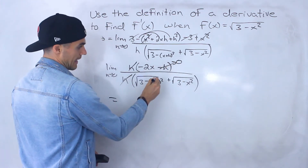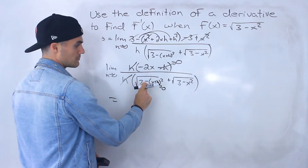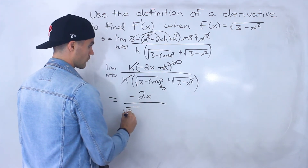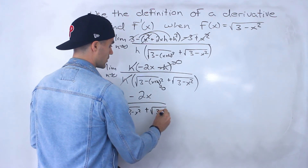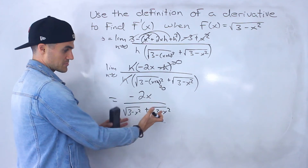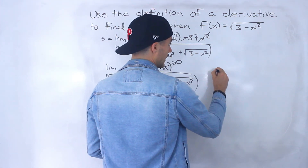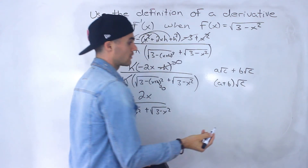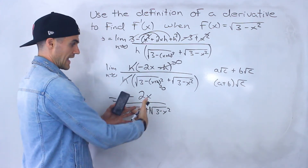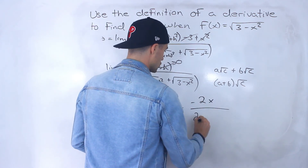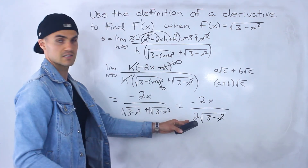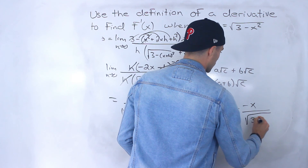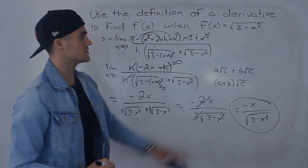Plugging in 0, the h terms go to 0, so we're left with negative 2x over the square root of 3 minus x squared plus the square root of 3 minus x squared. These are like terms since the same expression is under the square root, so we combine them: negative 2x over 2 times the square root of 3 minus x squared. The 2's cancel, giving us the final answer: negative x over the square root of 3 minus x squared. That is the derivative for that function.